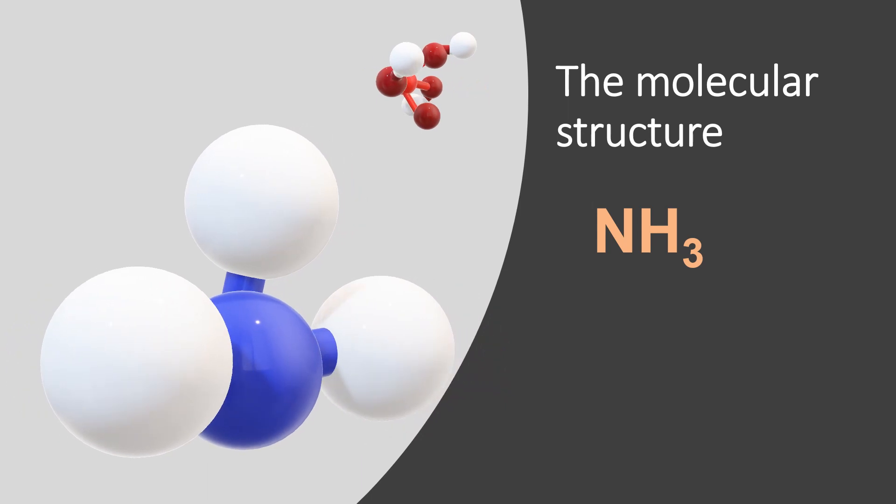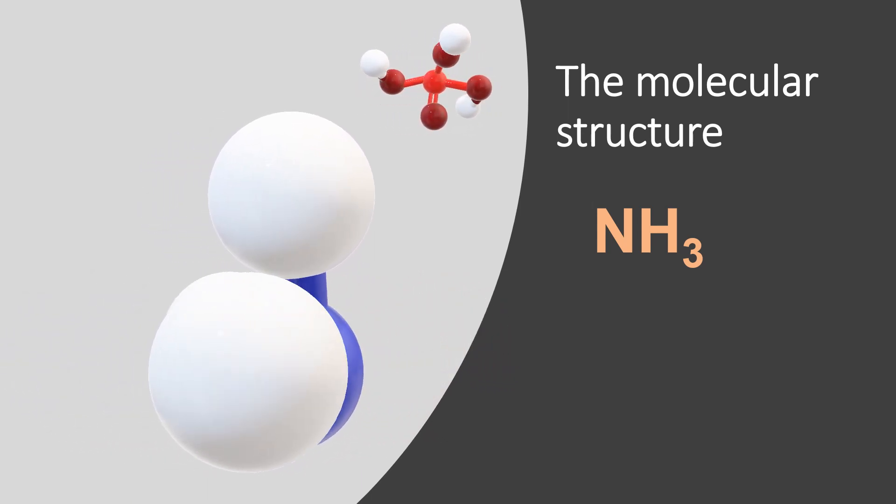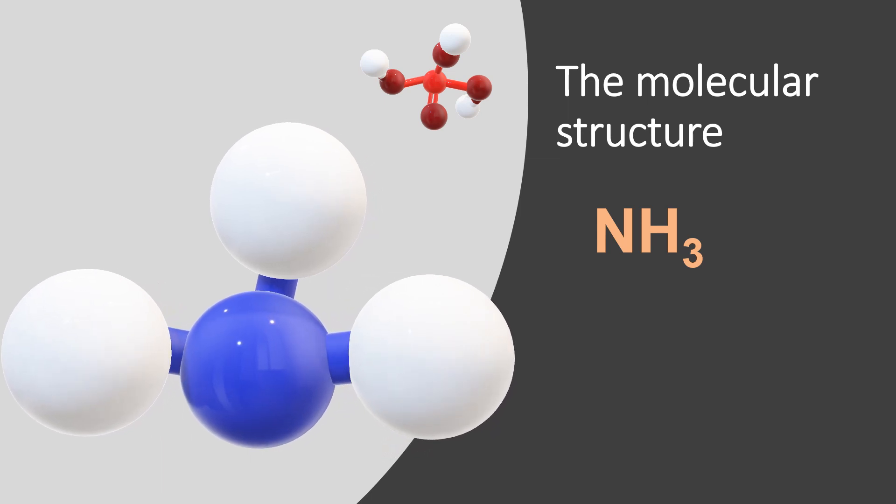The chemical structure shown here is of one ammonia molecule. It is formed by three atoms of hydrogen and one atom of nitrogen.